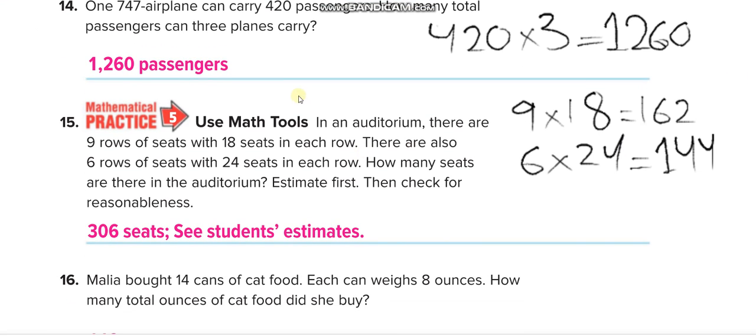In an auditorium there are 9 rows of seats with 18 seats in each row. So 9 times 18 equals 162. There are also 6 rows of seats with 24 seats in each row, so 6 times 24 equals 144. How many seats are there in the auditorium? So you will add these two: 306 seats.